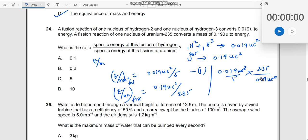I get this as 0.019Uc² divided by 5 multiplied by 235 divided by 0.19Uc². Uc² cancels. So,